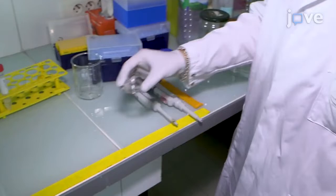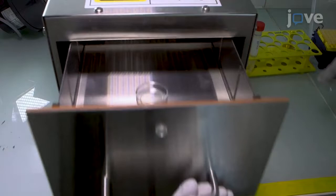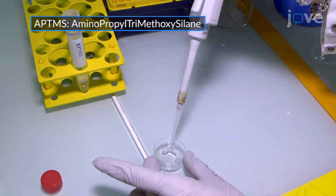Begin by silanizing the gel support. Activate the cover slip or glass bottom petri dish with a UV lamp for two minutes. Then, silanize it with 200 microliters of APTMS for five minutes. This will prepare the support for the covalent binding of the gel.